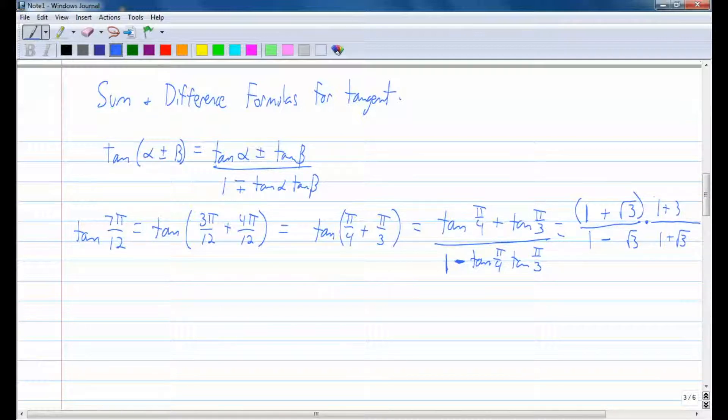So let's multiply out everything. In the numerator, you're going to get 1, and then you're going to get 1 square root of 3 and you're going to get another 1 square root of 3, so that's plus 2 square root of 3. And then when you say square root of 3 times square root of 3, you're going to get plus 3. That's over...